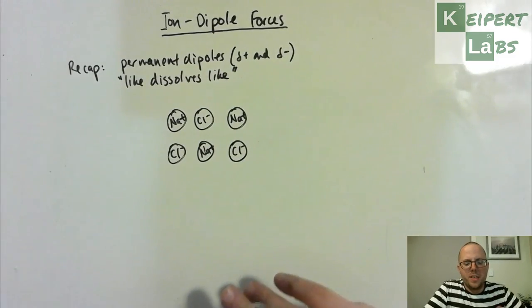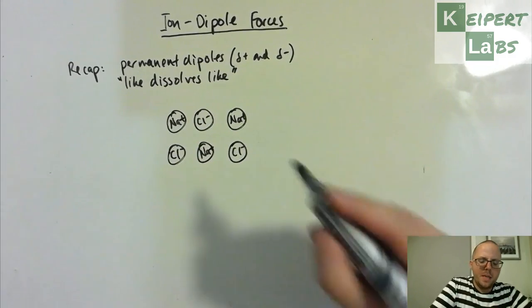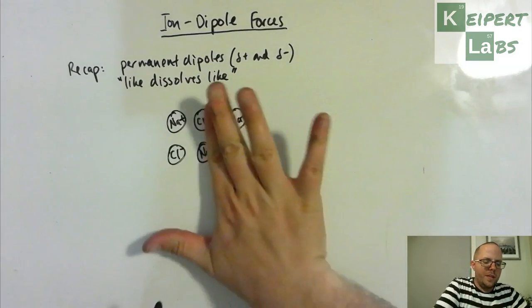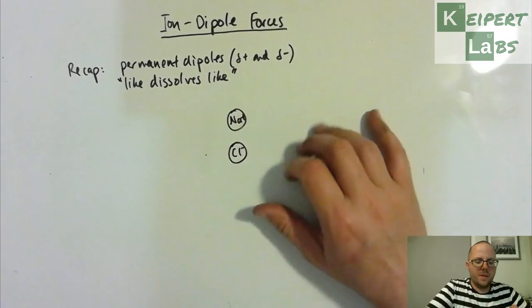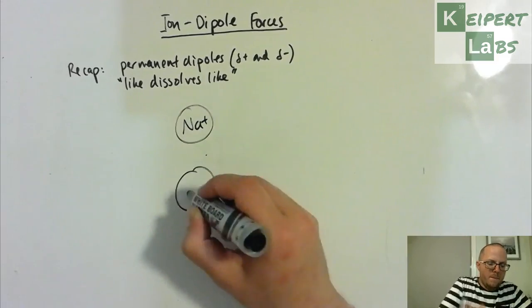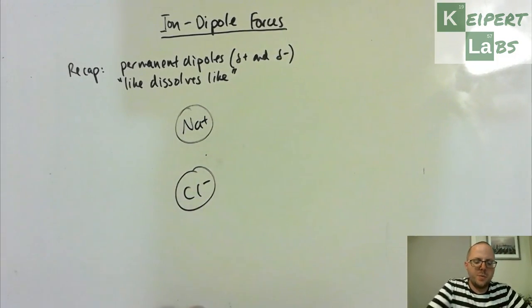And then we try to take this and we put it in water. So let's kind of ignore these inside bits of the crystal for the moment, and let's just focus on these, and I'll make them bigger. So we've got a sodium ion, we've got a chloride ion. What happens when we put this in water?